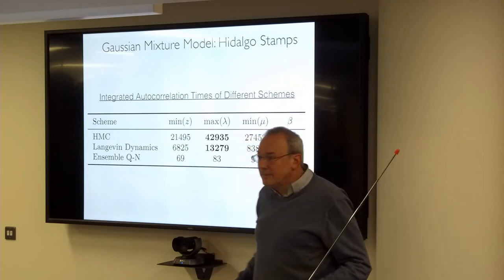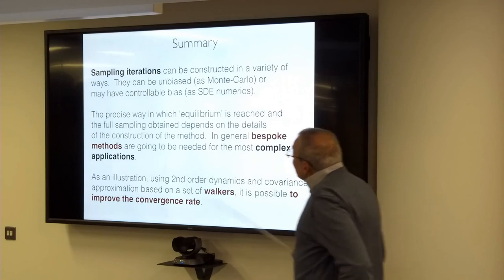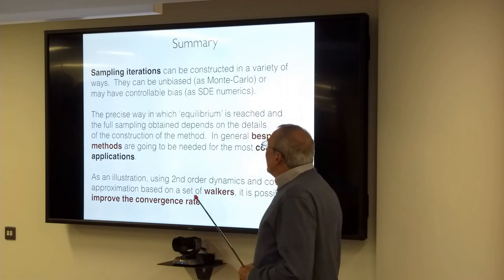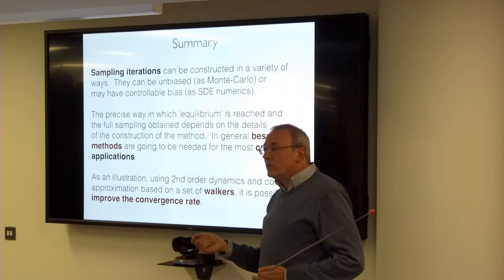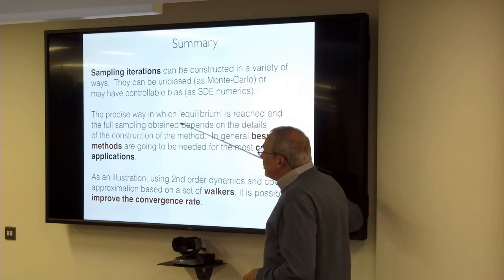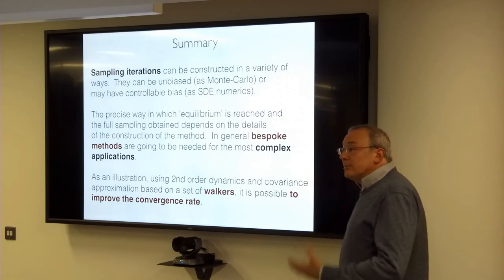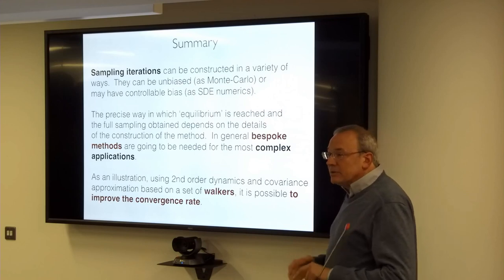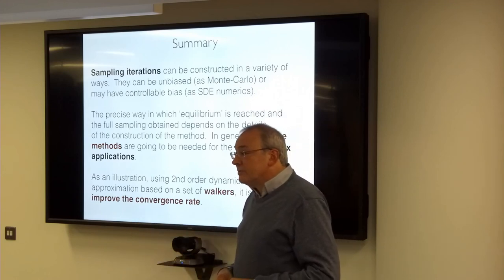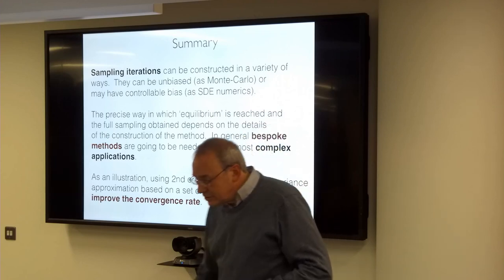Using a weighted covariance-based dynamical sampler with multiple walkers, comparing integrated autocorrelation times for different quantities between Hamiltonian Monte Carlo, Langevin dynamics, and ensemble quasi-Newton (our new method), you can dramatically reduce the integrated autocorrelation time. Sampling iterations can be constructed in many ways — designed to be unbiased or with controllable bias. In most cases you actually need to build bespoke methods customized to the problems at hand, and that's an issue for machine learning — we need to understand the structures of these landscapes.